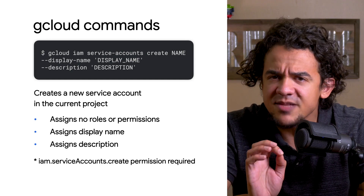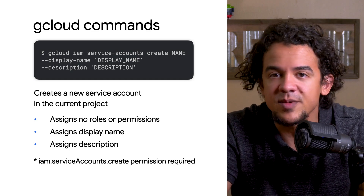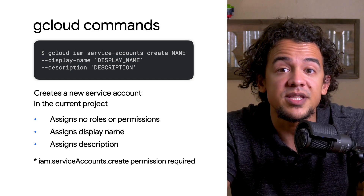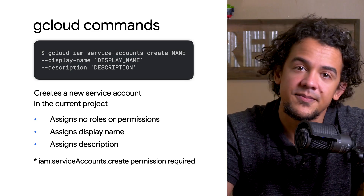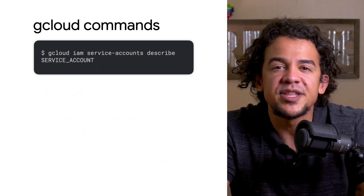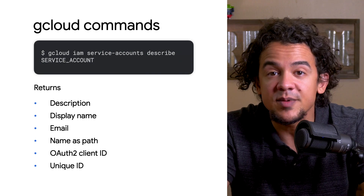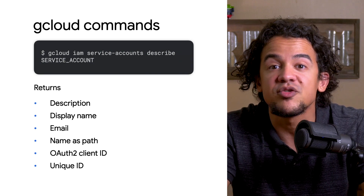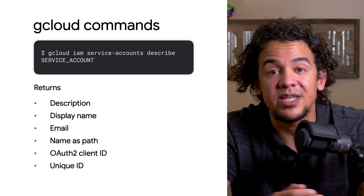This will be especially useful if your project accumulates a long list of service accounts, each with a different purpose and set of IAM roles assigned to it. You can view the display name and description for any service account using gcloud iam service-accounts describe, followed by the service account email.